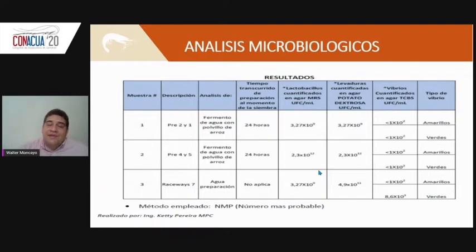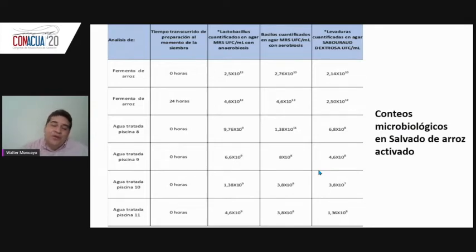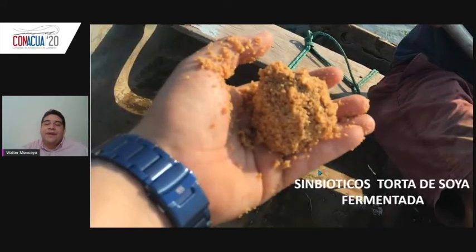We reviewed concentrations of Lactobacillus and yields. The Vibrio were present but were attenuated — not virulent. We performed bacterial counts finding 10^13 to 10^9. We checked for Lactobacillus, Bacillus, and yeast. We use probiotics as a cocktail of beneficial bacteria to ensure a group of activated probiotics is present.